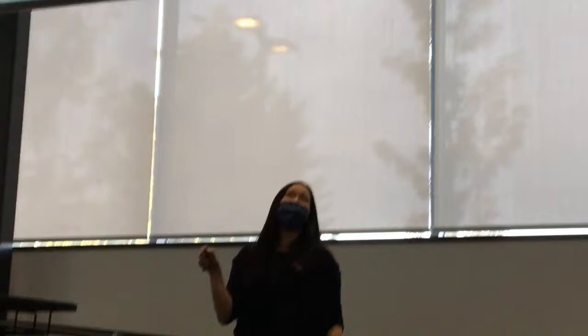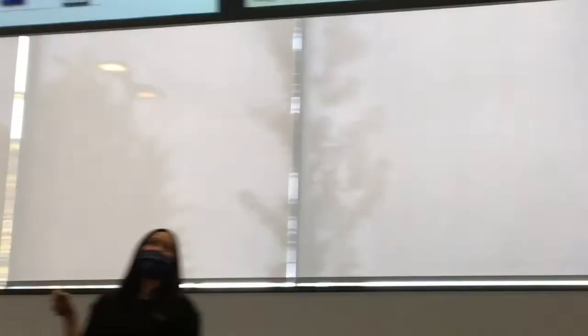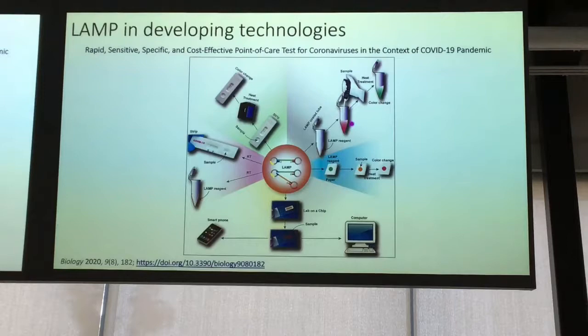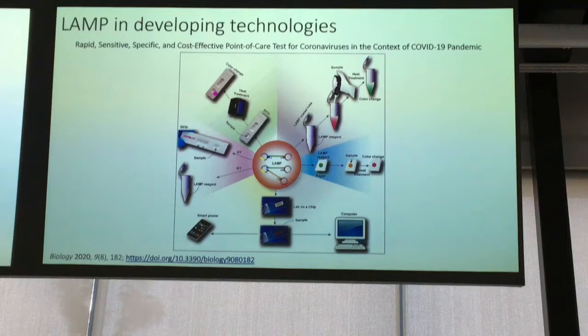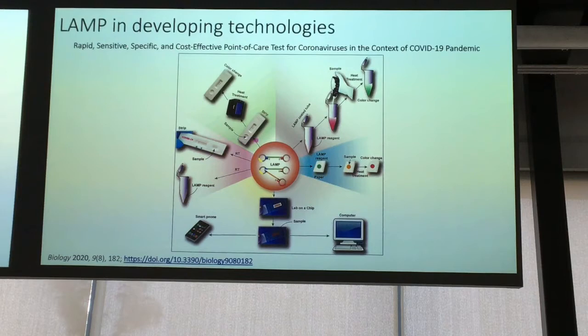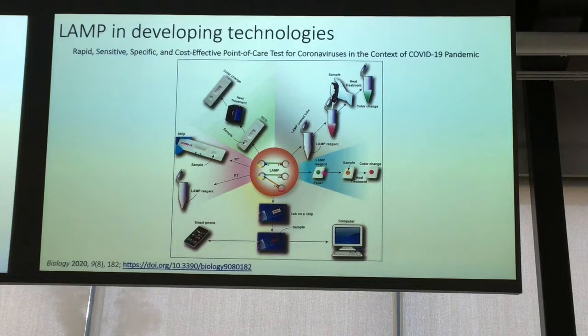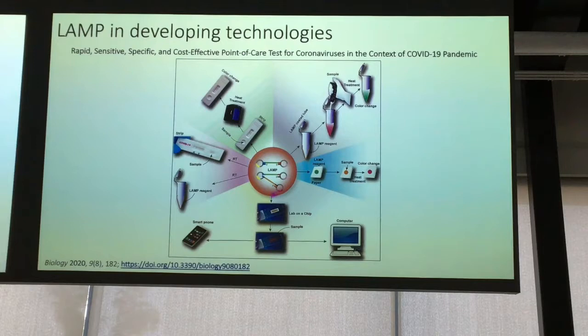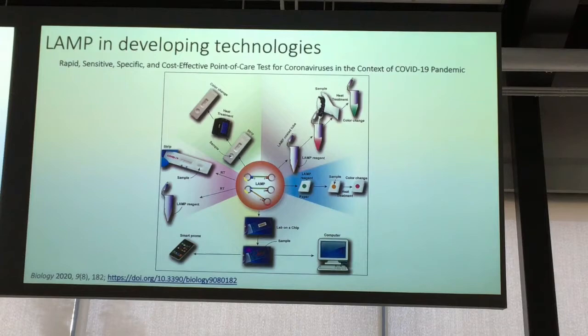These are all the ways we can use LAMP. There's the tube method where we look at a change in color. You can put the assay onto a lateral flow device and see a color change on a pregnancy-strip-like device. You can do it on paper, which is really cheap and great for developing countries. And finally, if you want more sensitivity, you can put the assay on a lab-on-a-chip — which is my area of research. That's what really prompted me to start studying LAMP: the ability to put LAMP into microfluidics.